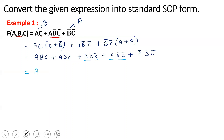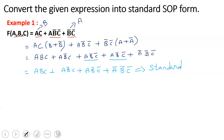So the result is equal to ABC + AB̄C + AB̄C̄ + ĀB̄C̄. This is the final standard SOP canonical form — the minimal SOP has been converted to the standard SOP.